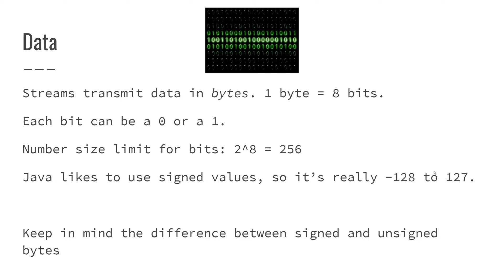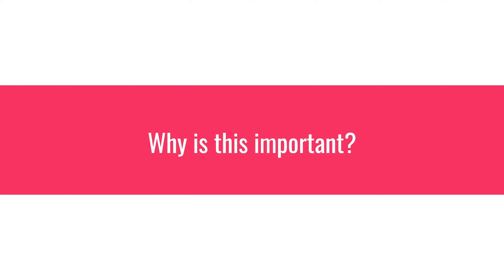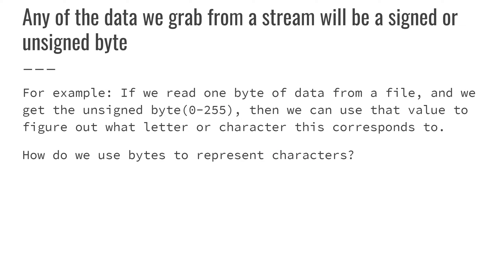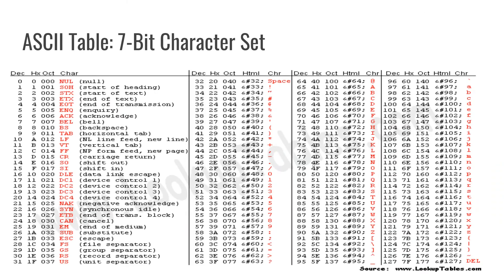Any data that we grab from a stream will be a signed or unsigned byte. For example, if we read one byte of data from a file and get the unsigned byte value — 0 through 255 — we can use that value to figure out what letter or character this corresponds to. So how do we use bytes to represent characters? Every byte that we can read from a file stream, for example, is going to correspond to a character, like a letter. So how do we know how to translate bytes into an actual character? We have things called character sets.